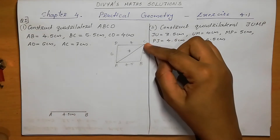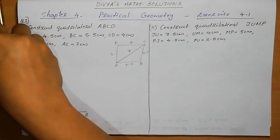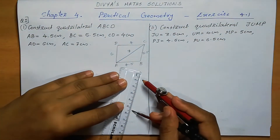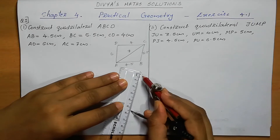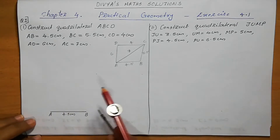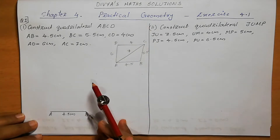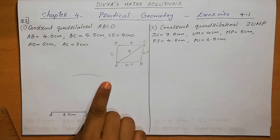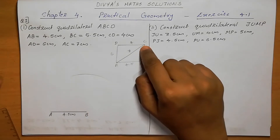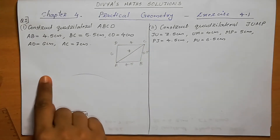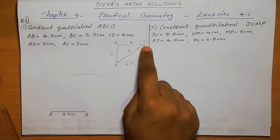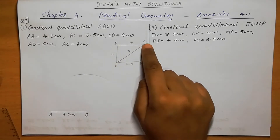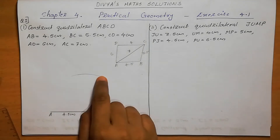Next step BC. B to C distance is 5.5 cm. So using the scale, take 5.5 cm in the compass. Using B as center, we need to draw an arc for BC. But here we don't get the C point exactly — we don't know the exact point. So how do we find the point of intersection C? D to C we also don't know, since D is also unknown.